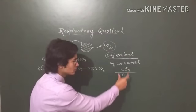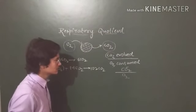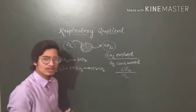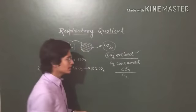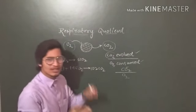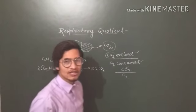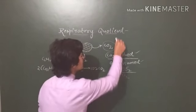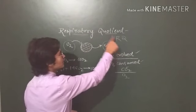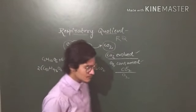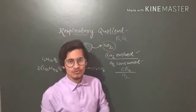So CO2 by O2 means CO2 evolved divided by O2 consumed. This is RQ, which is the abbreviation of respiratory quotient. So this is the basic ratio of CO2 evolved and O2 consumed.